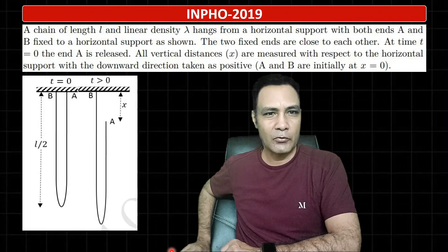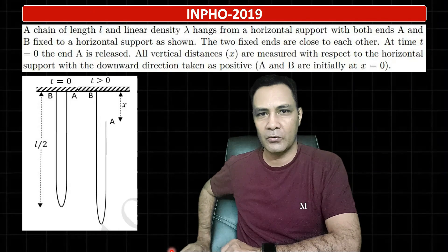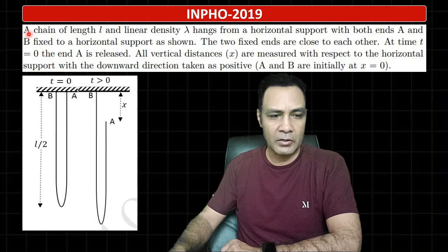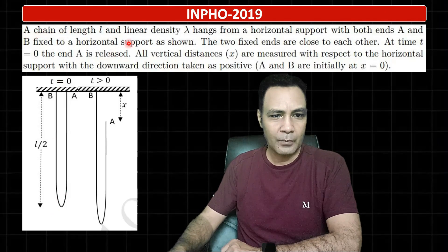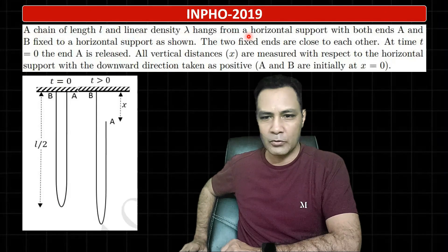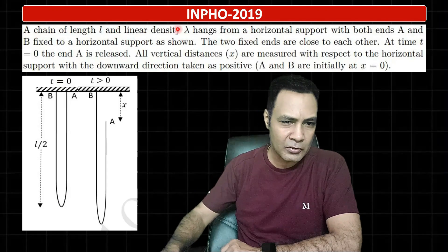Hello all. I am going to discuss a chain problem from INPHO 2019. It's a very good question of variable mass dynamics. The question on screen states: a chain of length L and linear mass density λ hangs from a horizontal support with both ends A and B fixed to the horizontal support as shown.